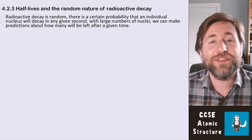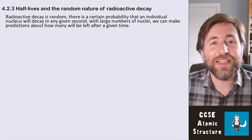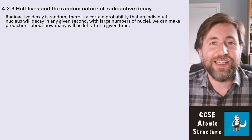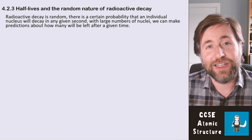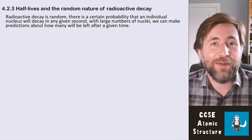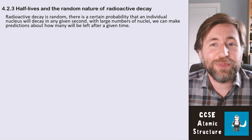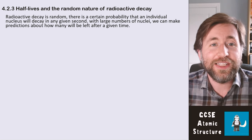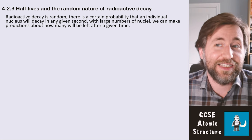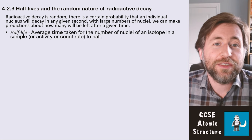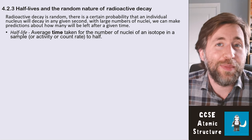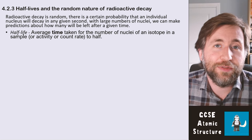Radiative decay is random, but because there are so many atoms in any given sample of any substance, we can actually predict exactly how many will have decayed in any given period of time. That's because there's a certain probability of any individual nucleus decaying in any given second, so because we have these large numbers, we can actually measure how many are likely to decay after any given period of time.